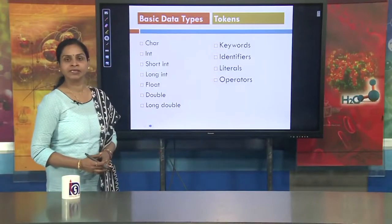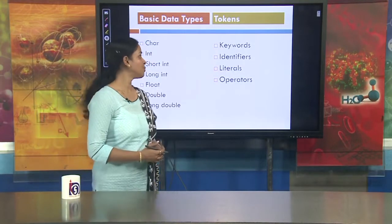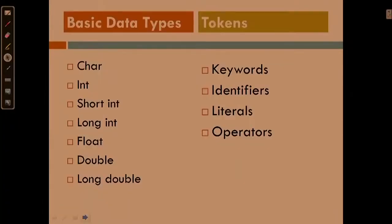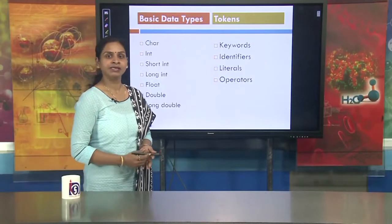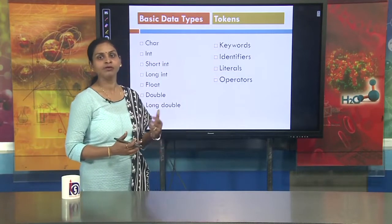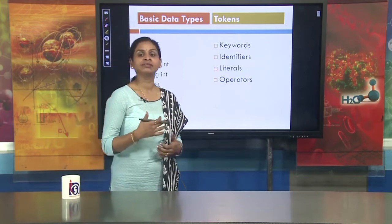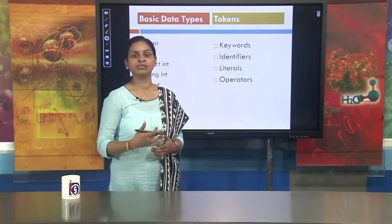Next we will discuss the basic data types C++ includes and what is a token. Under basic data types it includes character data type, integer data type, short integer, long integer, float data type, and long double. Depending on the ranges defined, the data type is categorized as short or long. As we proceed to the next classes and start writing C++ programs, we will gradually learn about these categories of long integers and short integers.